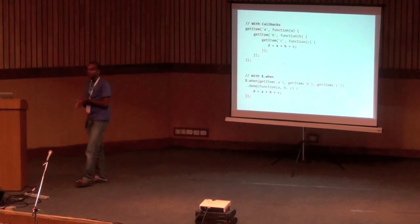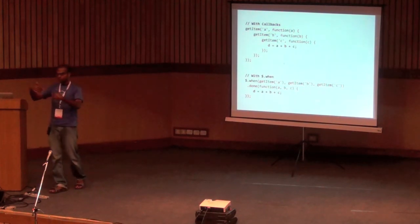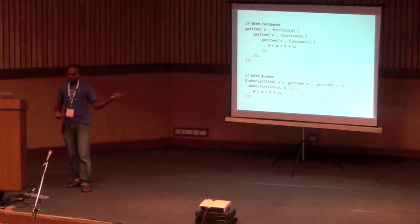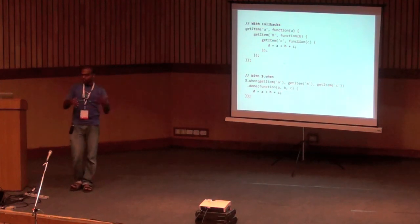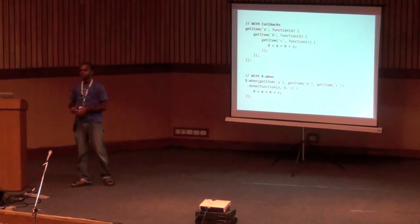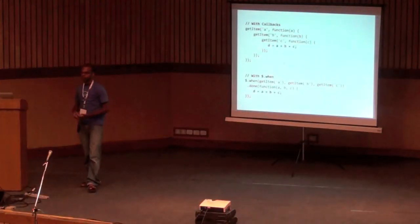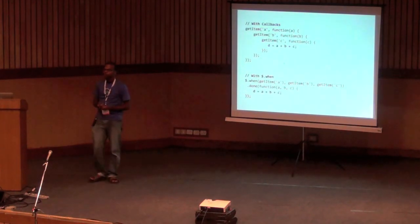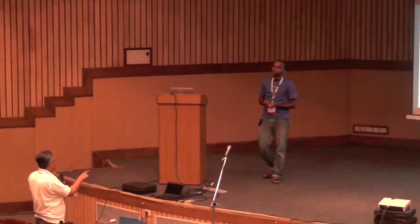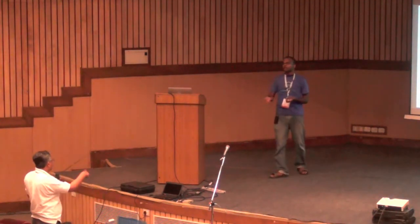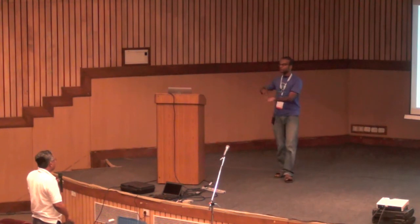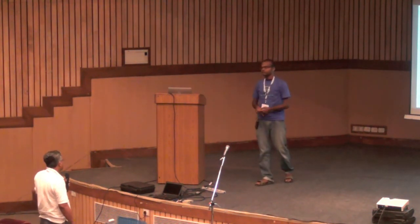There is also $.pipe, which makes operations linearly dependent — same syntax as $.when but calls execute one after the other, and you can also specify filtering on top of the results. As for unit testing — deferreds do make it easier, because you can create a mock deferred that instead of doing a network request does something else and returns mock data, though I am not sure it is drastically different from using raw callbacks.